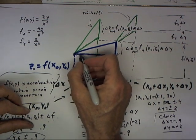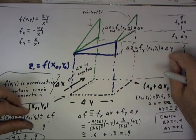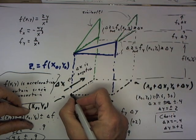Now, if I move in the positive y direction, of course, I get my change fy delta y, where fx and fy are both evaluated at the point x0, y0.